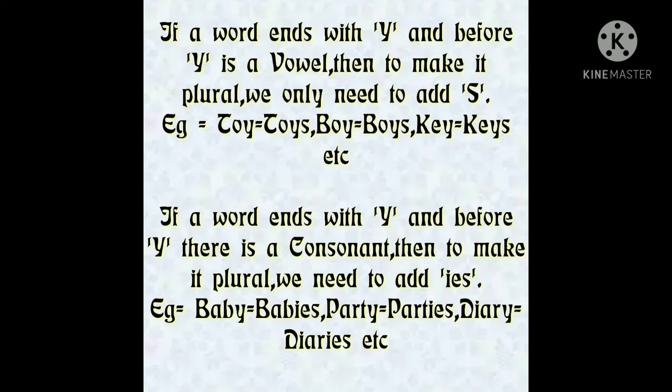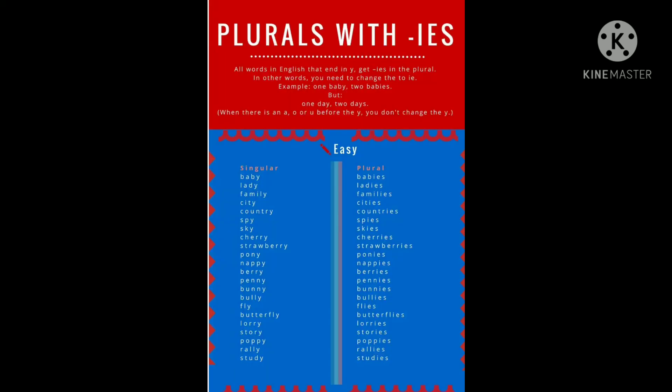But if a word ends in Y and before Y there is a consonant, then to make it plural we need to add I-E-S. For example, Baby will become Babies. Why? Because in B-A-B-Y, before Y is B, which is a consonant — that's why we add I-E-S to make it plural. Similarly, Diary will become Diaries because R is a consonant before Y.